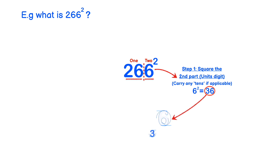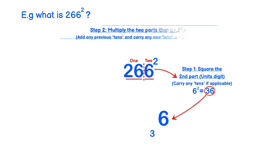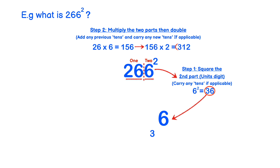6 squared is 36. So we put 6 in the answer line and we carry the 3. In step 2, we multiply the two parts and then we double, add any previous tens, and carry any new tens if applicable. So we do 26 times 6 which is 156. Doubling that gives us 312. Adding the 3 from before gives us 315. So we put the 5 in the answer line and we carry the 31.